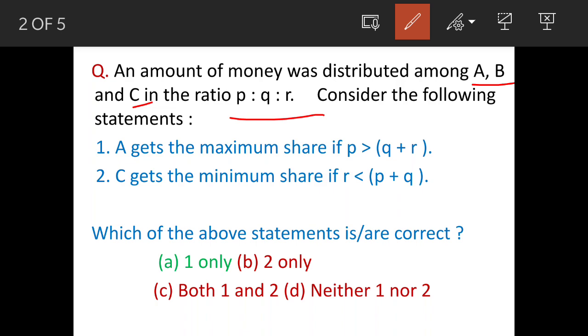So statement 1: A gets maximum share if p is greater than q plus r. And statement 2: C gets minimum share if r is less than p plus q. Now which of the statements are correct? The answer is statement 1 only. We will examine how.